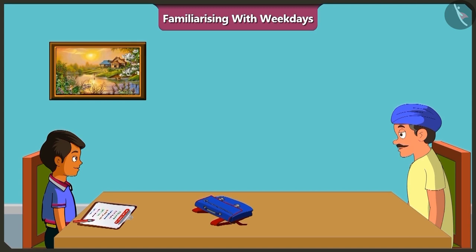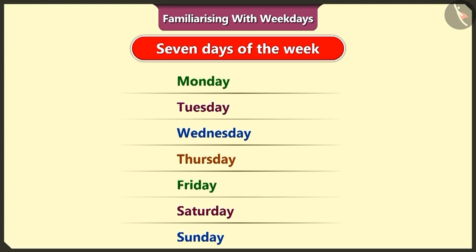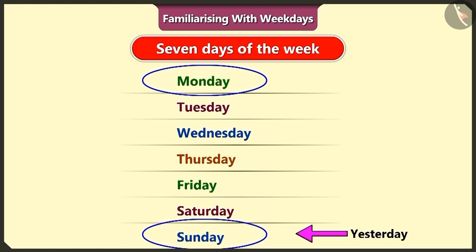Yesterday was which day of the week? Yesterday means the day that has gone, or the day before today. Today is Monday, so the day before that was Sunday. Correct. Now mark a circle on Sunday and write 'yesterday' next to it.